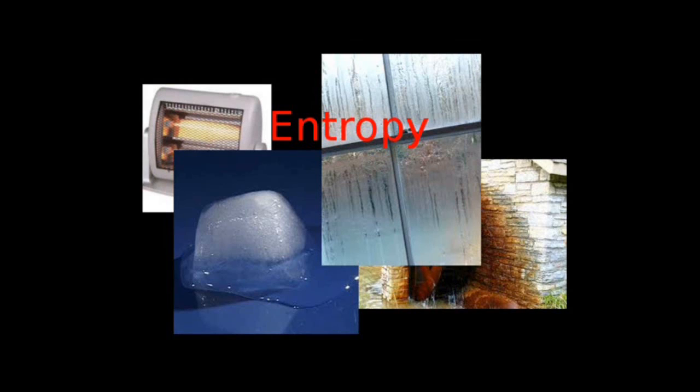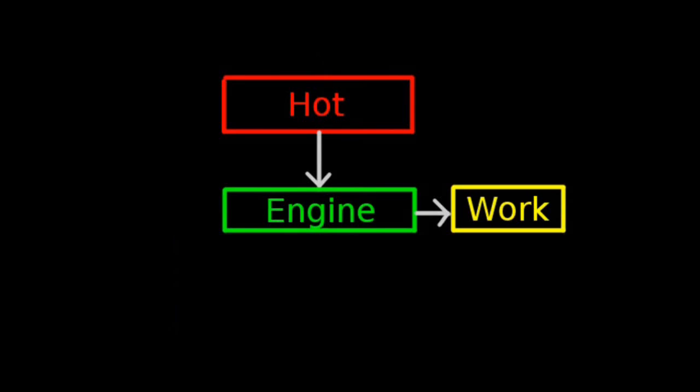Surprisingly, the path to the second law is done by examining engines. What an engine does is take heat away from something and cause work, burning petrol to turn a wheel for example. Let us draw a very very technical diagram of this engine. As you can see, the engine takes heat from the hot environment and separates it into work.